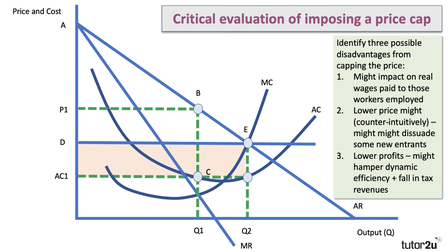Although consumer surplus goes up in theory, producer surplus goes down — and profits can sometimes have a purpose. If you're a utility company and profits are down, there may be less money to invest in research and development, and less money to spend on improving network quality, infrastructure maintenance, and improvement. That could damage the quality of service to customers in the long term. Profits are also taxed, and if the cap reduces profits, the government will receive less in taxes such as corporation tax.